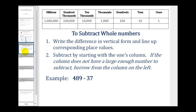To subtract whole numbers, we write the problem in vertical form and line up the corresponding place values, just as we did when adding whole numbers. Then we subtract starting with the ones column and work our way left. However, if a column does not have a large enough number to subtract, we will have to borrow from the column on the left.